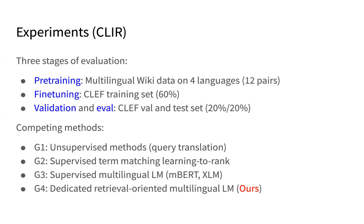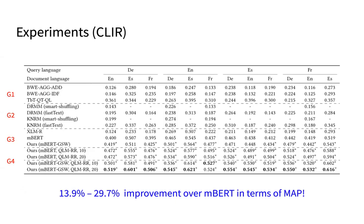The main evaluation task is CLIR, with three stages: pre-training, fine-tuning, and evaluation. The model is first pre-trained using our proposed data, then fine-tuned using the training set of the CLIR dataset, and we report MAP performance on the evaluation set. We group competing methods into four groups: unsupervised methods relying on query translation; traditional supervised term-matching learning-to-rank models; general-purpose multilingual language models such as multilingual BERT and XLM; and dedicated retrieval-oriented multilingual language models proposed in this work.